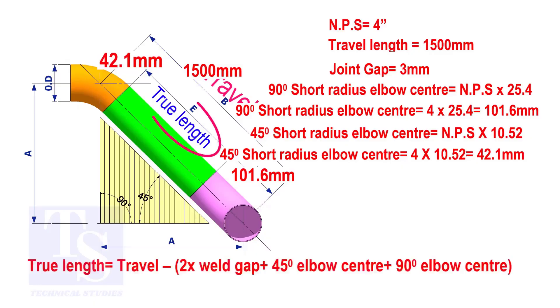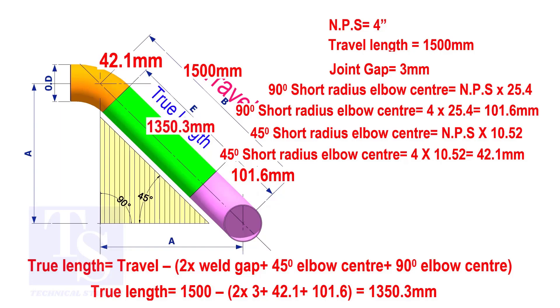To calculate the true length of the pipe, subtract two weld gaps plus both elbow centers from the travel length. The true length of the pipe is 1350.3 millimeters.